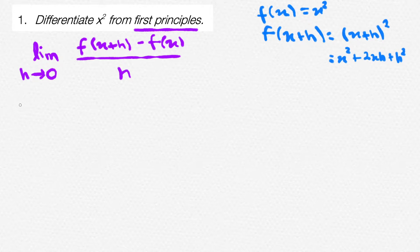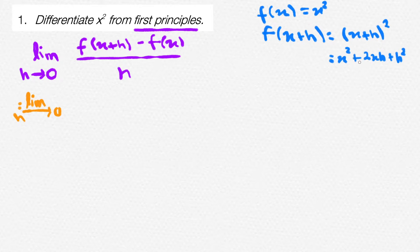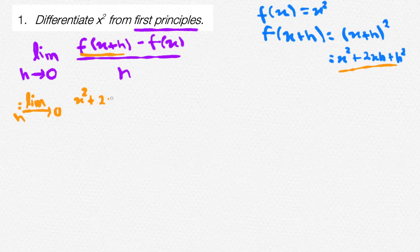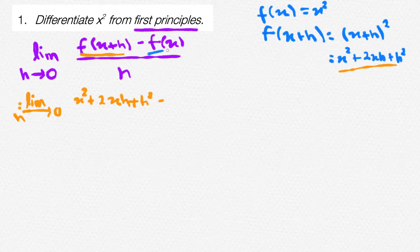Simplify this and it should give you x squared plus 2xh plus h squared. Now, looking back at our formula, we have the value of f of x plus h and f of x, so let's sub this back in. The limit as h approaches 0 of f of x plus h, which we now know is x squared plus 2xh plus h squared, minus f of x. We said f of x is equal to x squared, so we write minus x squared.